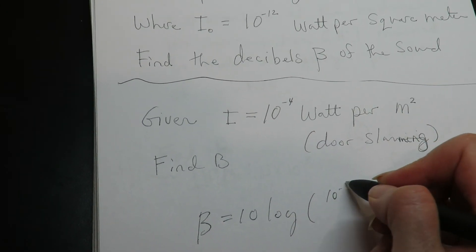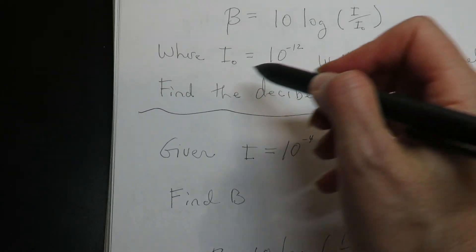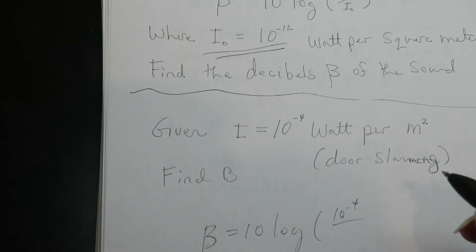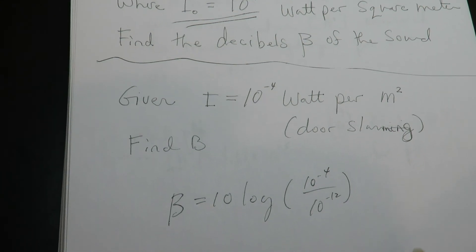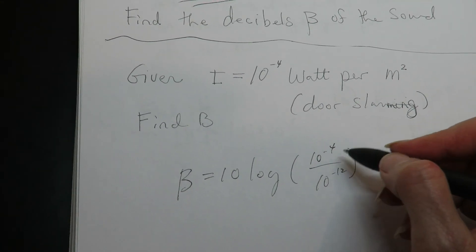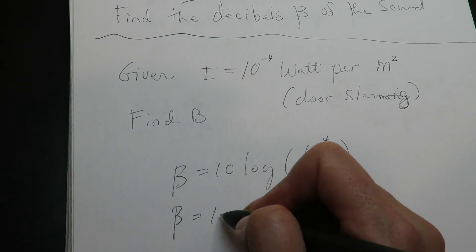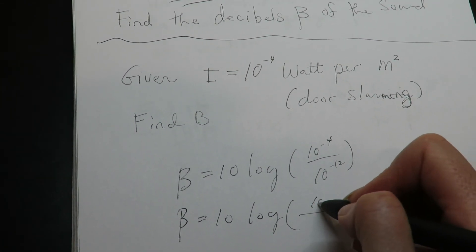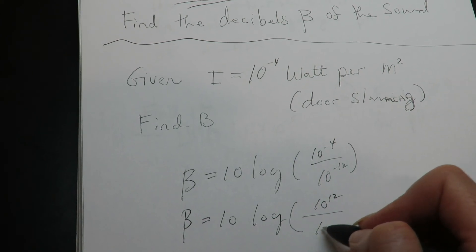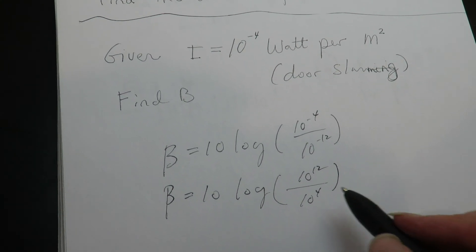They're giving you I as 10 to the negative 4. And I sub 0 is defined up here. It's 10 to the negative 12. Let me make sure I got the formula right. Now these are negative, which means that both sides can be flipped. So this can come up. This can go down.